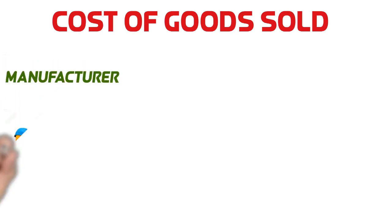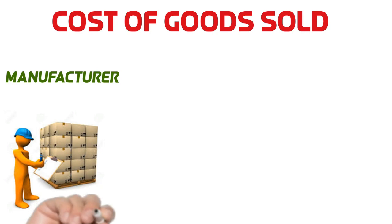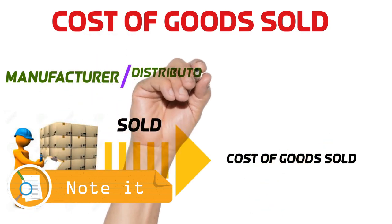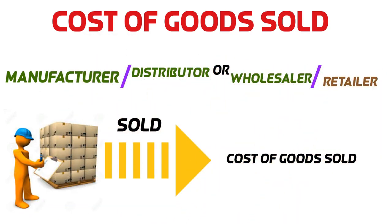Let me explain this definition. Let's say a manufacturer has sold its merchandise to a wholesaler. Then the cost of the inventory for the manufacturer becomes a cost of goods sold. But the distributor or wholesaler who bought this merchandise — the cost of the merchandise becomes a current asset for the wholesaler. When the wholesaler sells this merchandise to a retailer, then the cost of the inventory for the wholesaler will become a cost of goods sold. This merchandise will become a current asset for the retailer. The important point is that when anybody sells their inventory, the cost of the inventory will become a cost of goods sold. Otherwise, it will remain as a current asset.